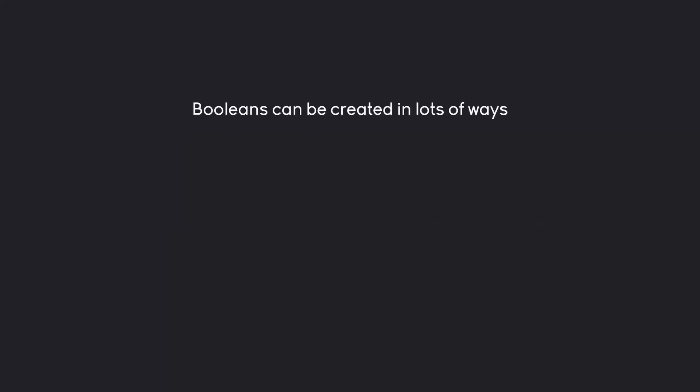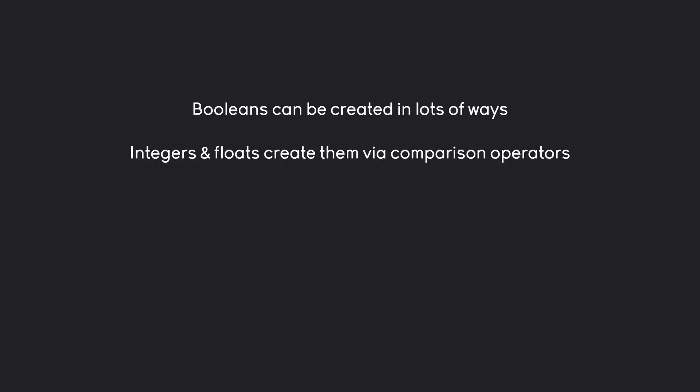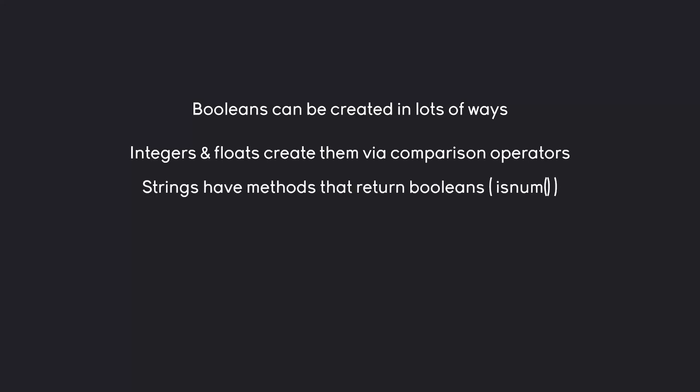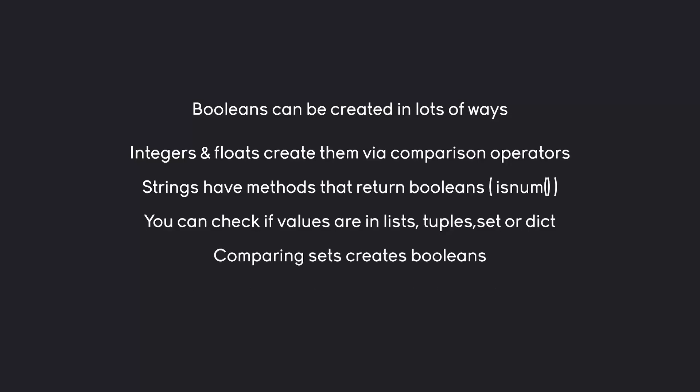Booleans can be created in a lot of different ways. One way we have seen already is using either integers or floats with comparison operators. We can also use some string methods like isNum to check if there's a number inside of a string, or isAlpha to check if there are only letters inside of a string. Another way is we can check if there are values inside of a list, tuple, set, or dictionary. We could also compare different sets to create booleans, and finally we can create booleans by themselves, although that's something you really aren't going to do too often.